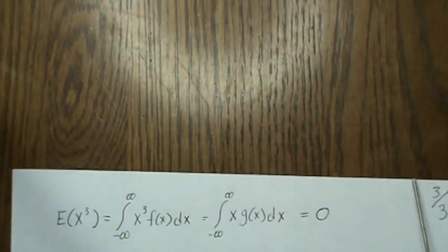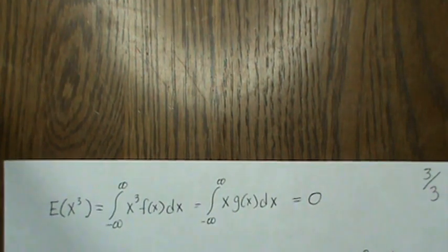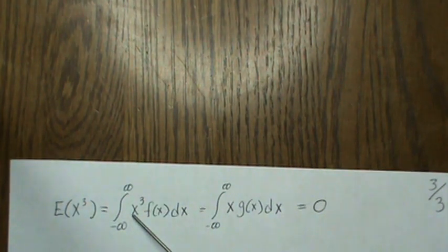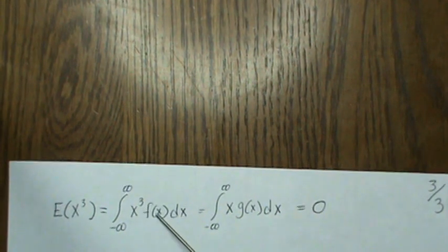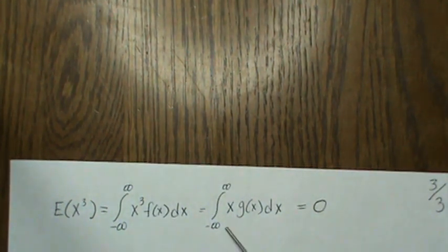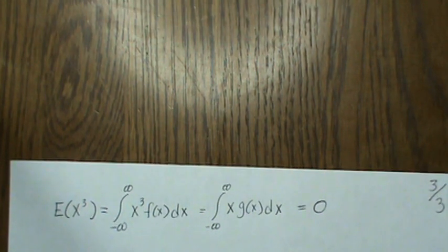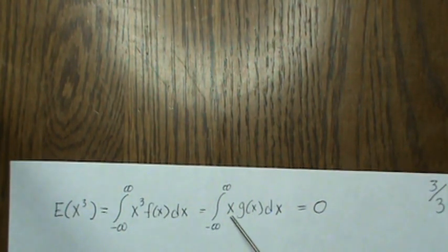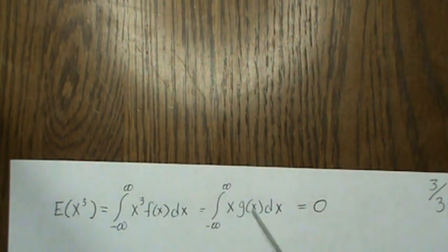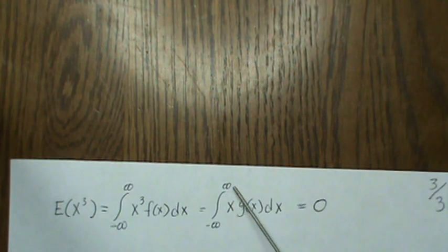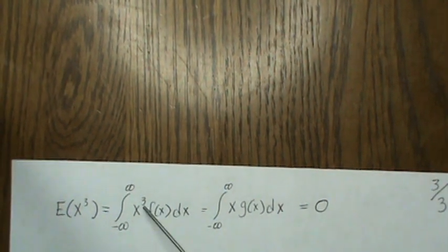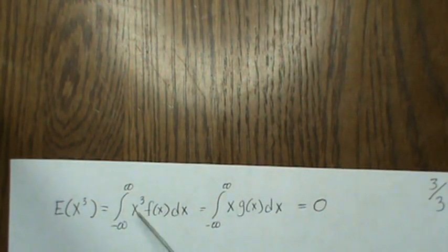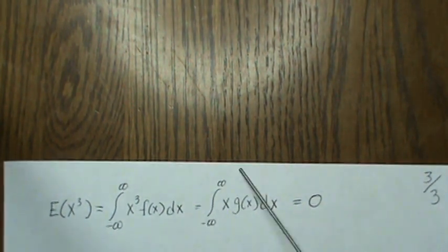Now the third moment — by definition, this is the integral of X cubed times F of X. If we take one of the X's out and put X squared with F of X, it becomes a function G of X equal to X squared F of X, which is an even function. Multiplying by X makes it an odd function. So this is an odd function integrated from negative infinity to infinity, so it instantly becomes 0. You can use that trick for any odd exponent: take out one X, and what's left is even; multiply by X and it becomes odd, and it always integrates to 0.